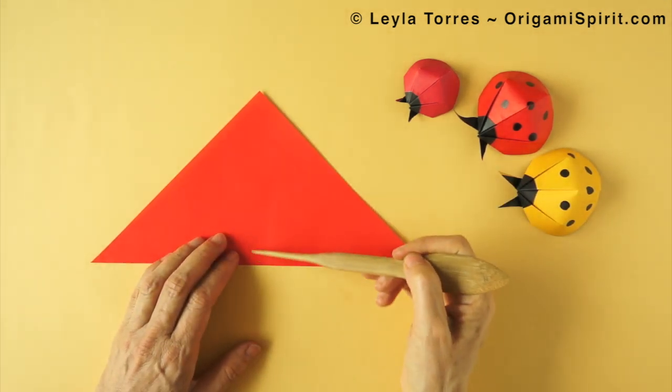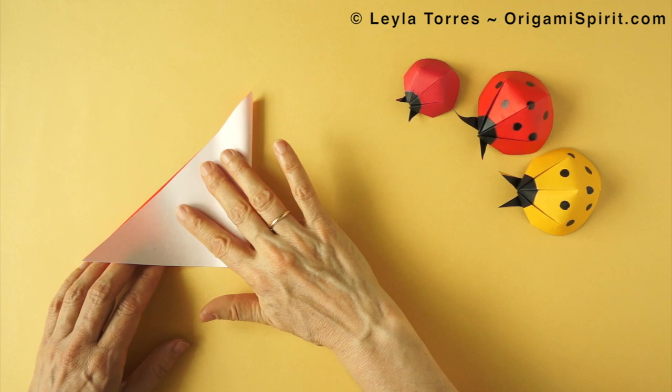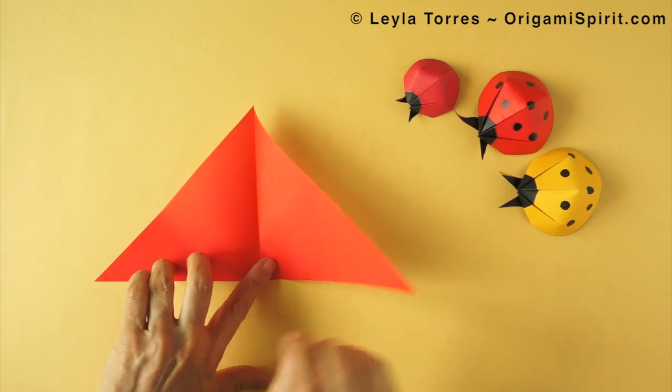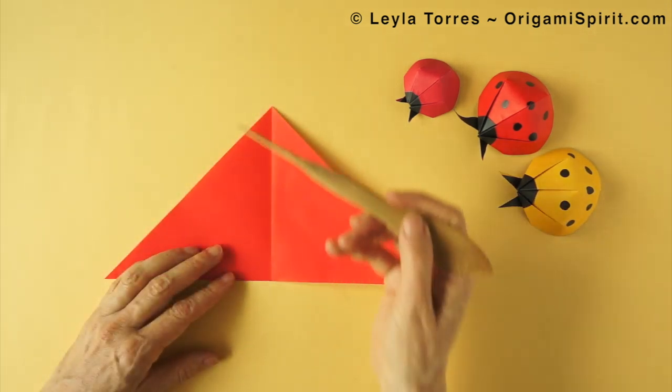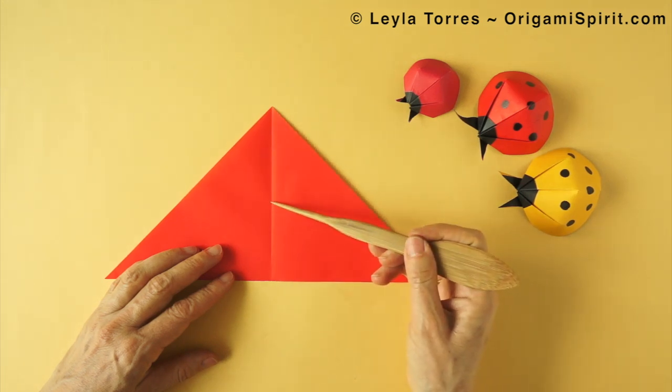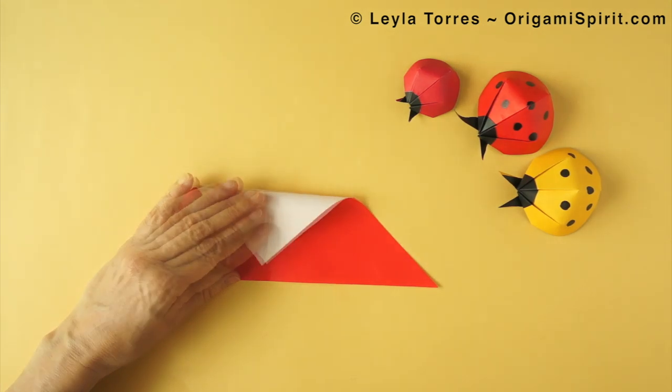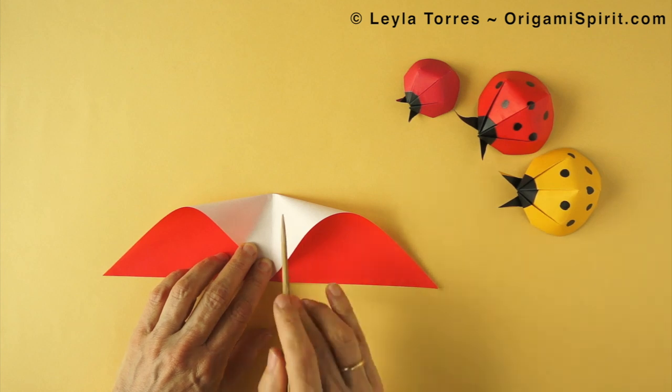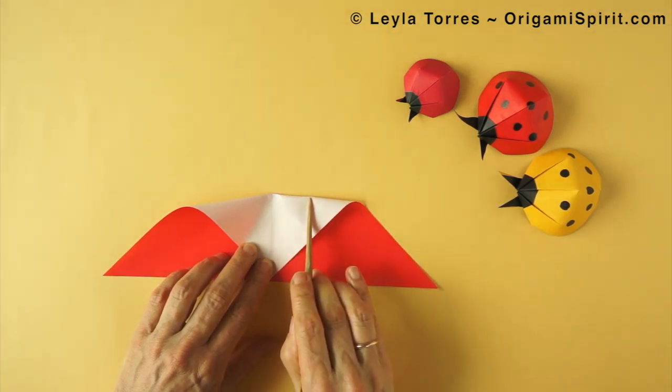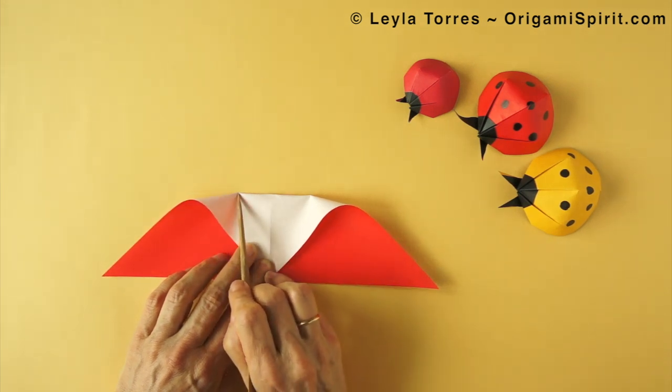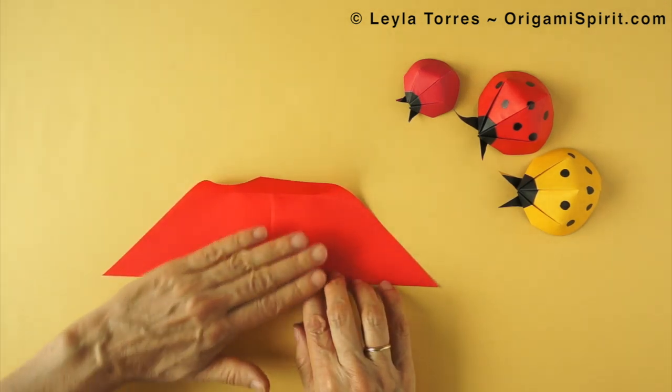We fold in half vertically and fold. We bring the upper corner down to the central point and make a pinch mark at the center. Right there at the center. And also, we are going to make pinch marks at the quarter distance and here at the quarter distance. Just a very short pinch mark. Unfold.